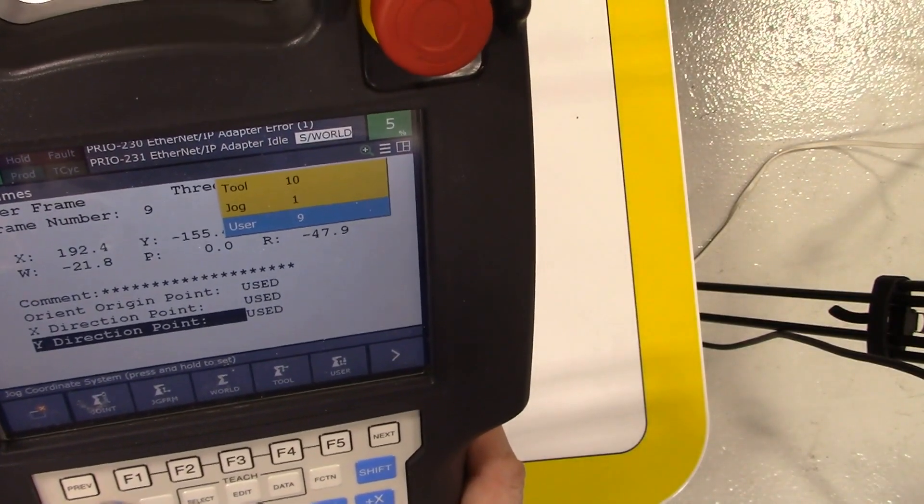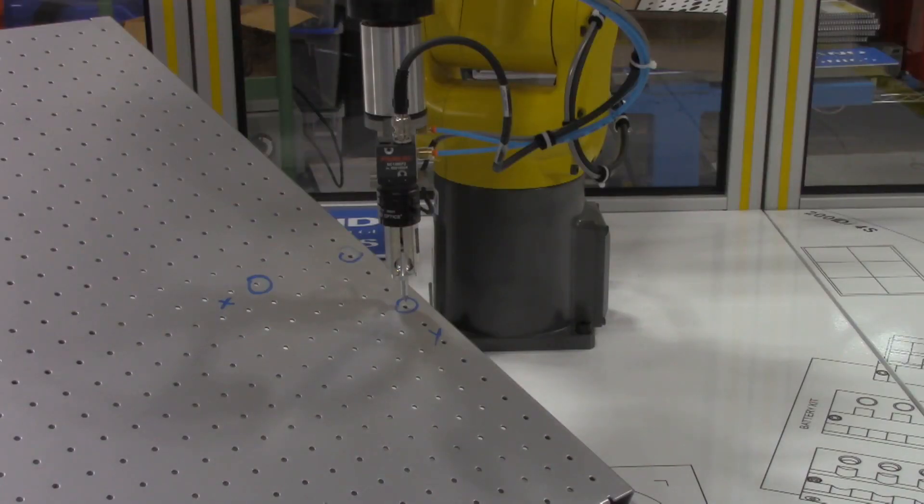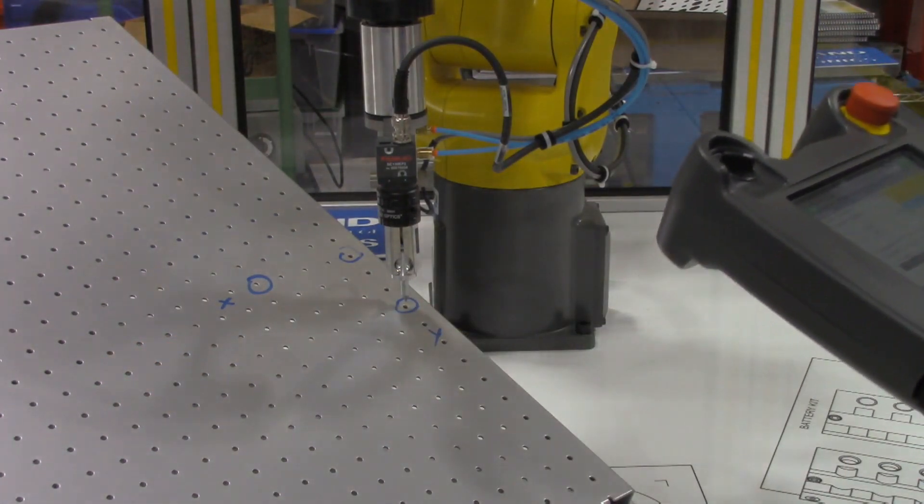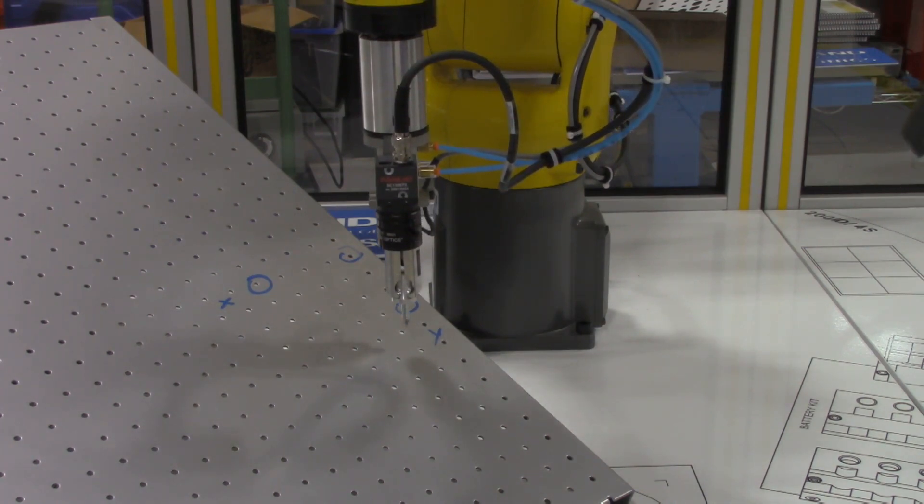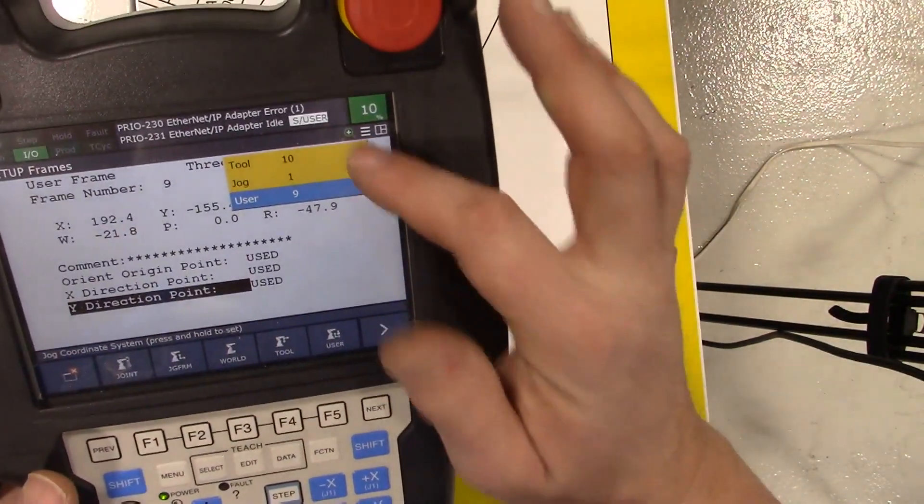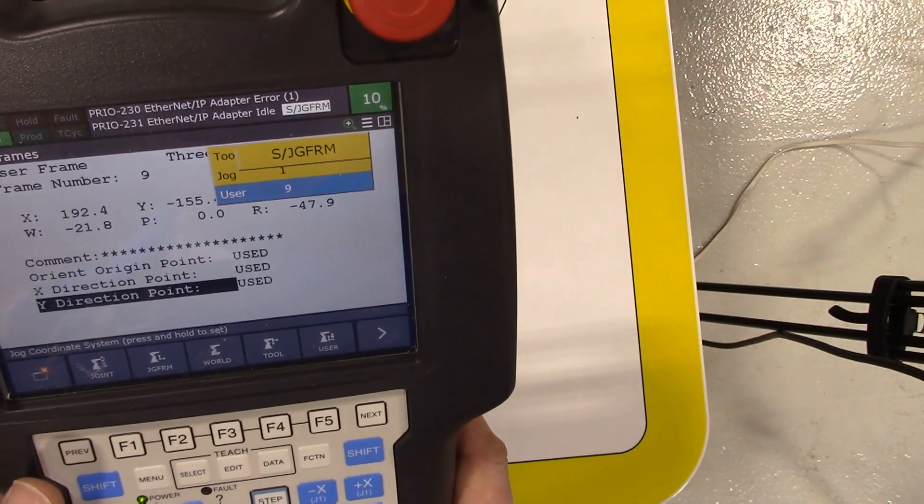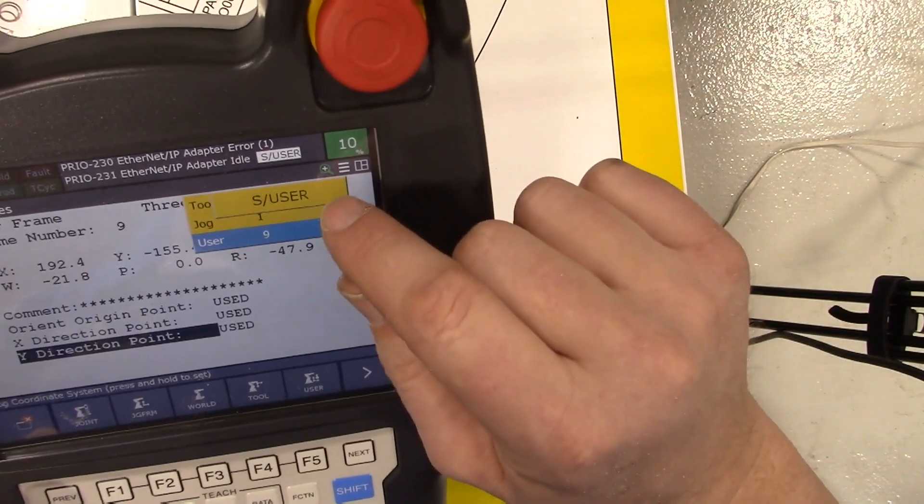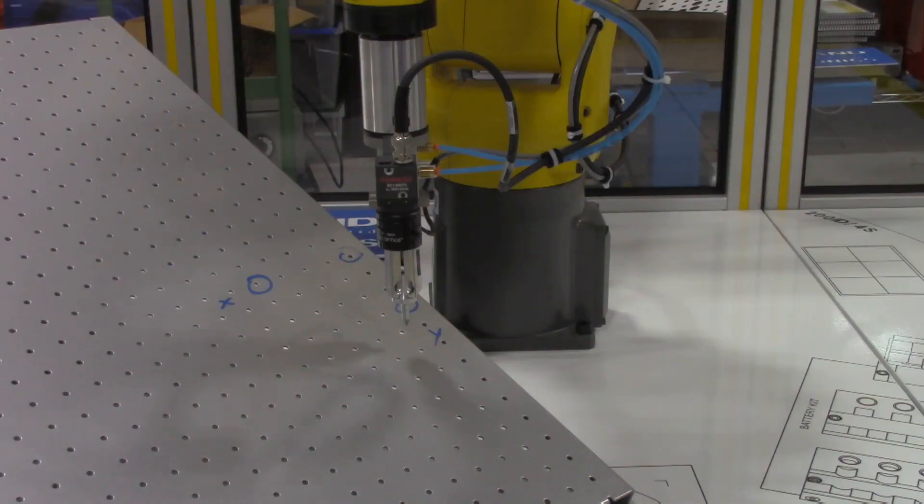And we should be able to then jog using tool frame 10 and user frame number nine. Very good. So let's go ahead and jog the robot around and show you what this looks like now when we're doing this. So X direction should be this way and it should follow that plane that we defined on the robot. So here's an X positive. Let me crank up the speed. Okay, I missed a step here. I can't jog in world mode. I have to jog in that user frame. So let me just show you that. We set up the user frame nine but I need to jog in, there's joint, there's jog frame, world frame, there we go. We want to jog in user frame.